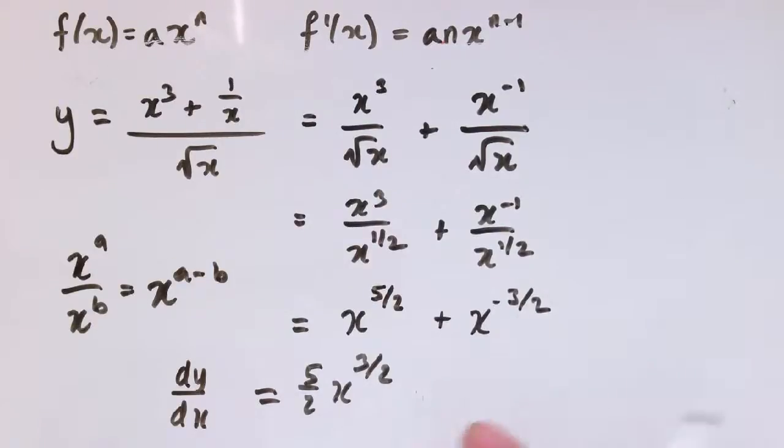Plus, well, minus 3 over 2, so actually this is going to be minus, x to the minus 3 over 2 minus 1, so that's minus 5 over 2. And there we are.